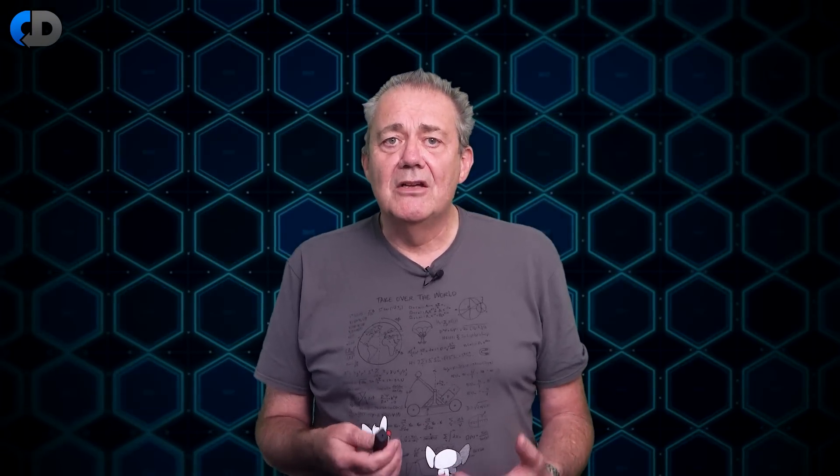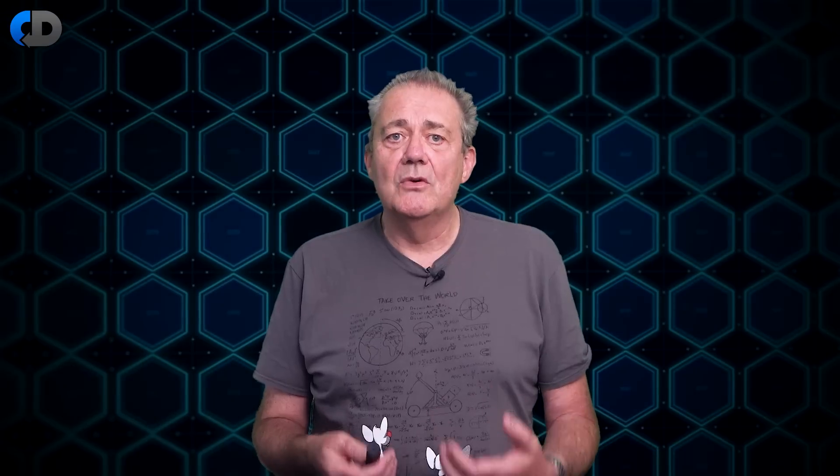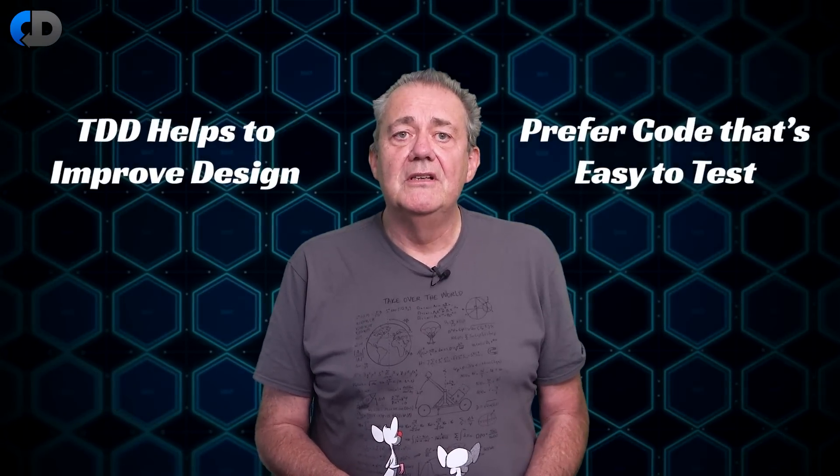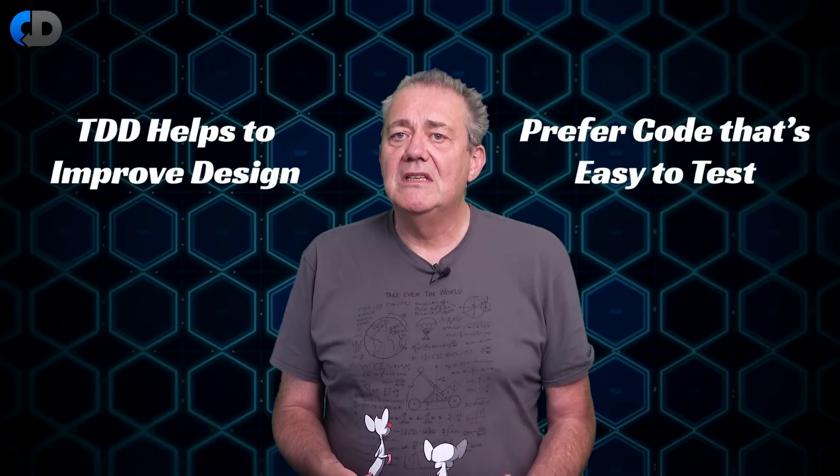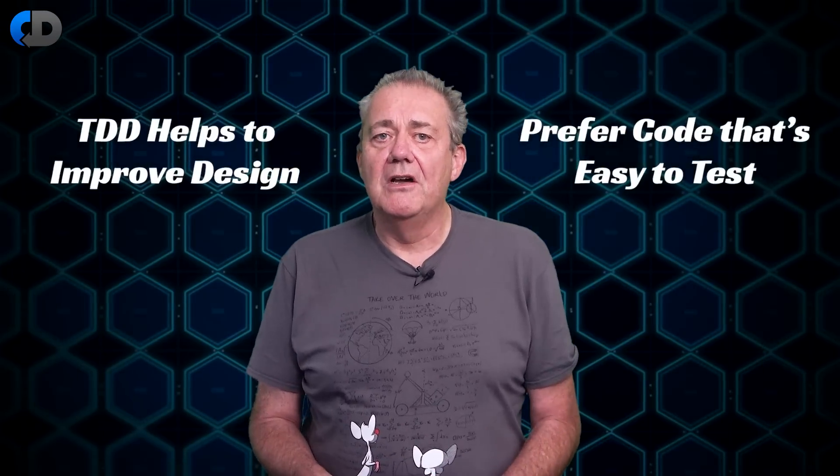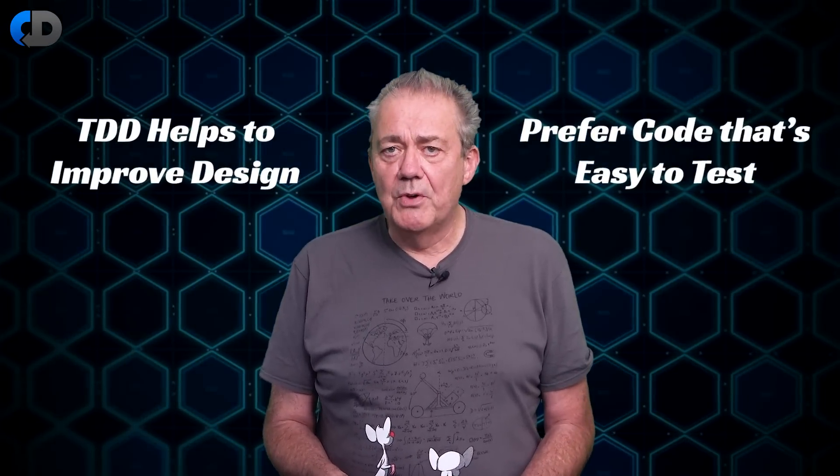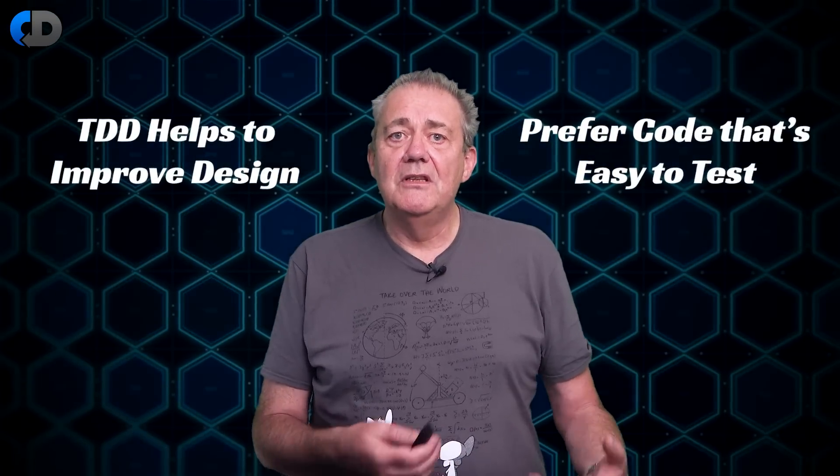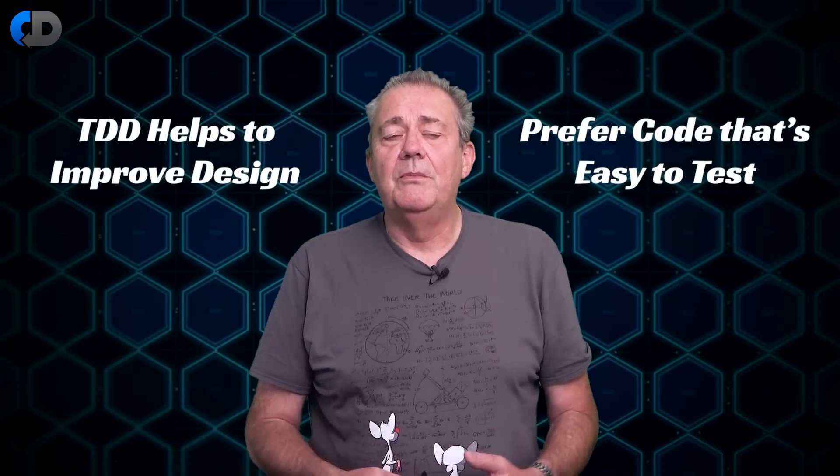Now the other significant part of test-driven development is that our goal is to use TDD as a way to help us to improve our design. We can do that by preferring code that's easy to test and code that's easy to change. If you're used to writing unit tests after you've finished the code rather than before, then this may sound surprising, because what happens when you write the test after the code is that the code and the test end up being tightly coupled together. So now our code is hard to change without either breaking or worse, invalidating our tests.